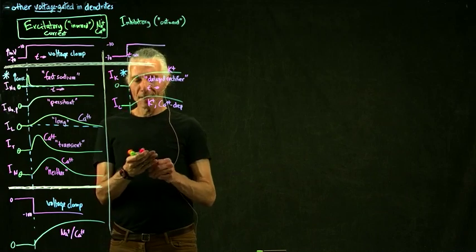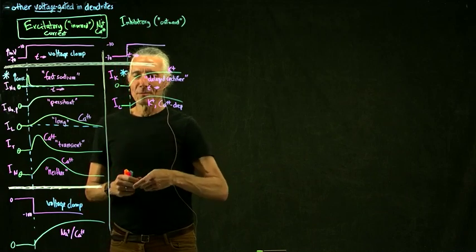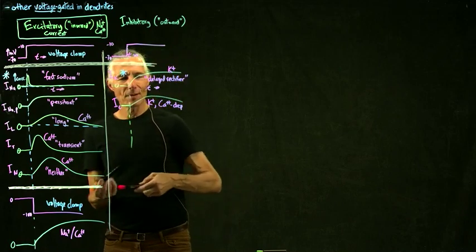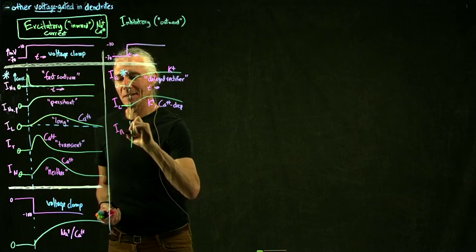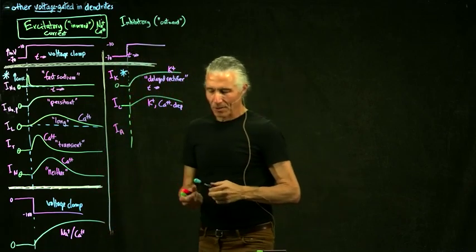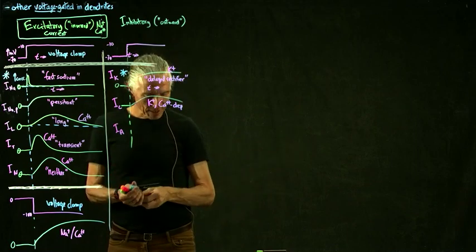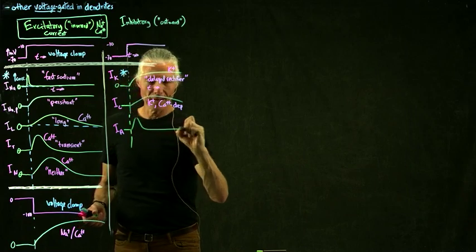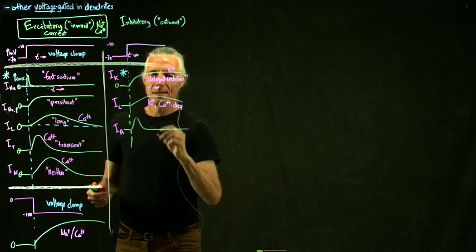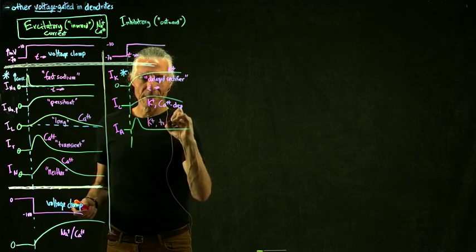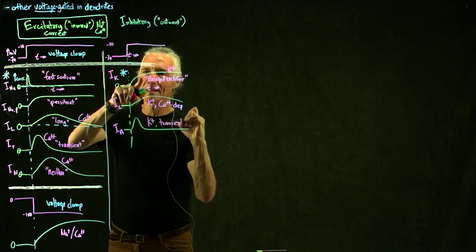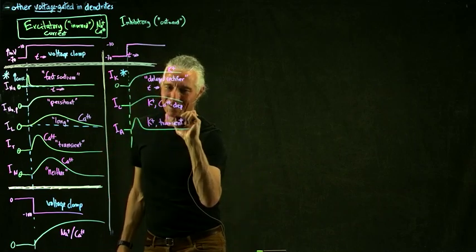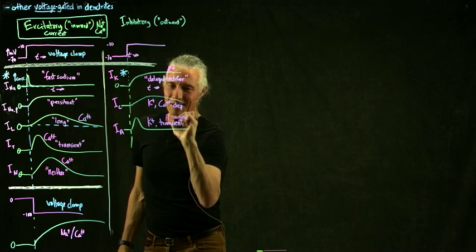There's another current originally discovered in snails, called the A current. It's quite transient — it inactivates pretty quickly. Unlike the delayed rectifier, it turns on and rapidly goes off. It's a potassium channel, but transient. It's usually just called the A current in the literature.